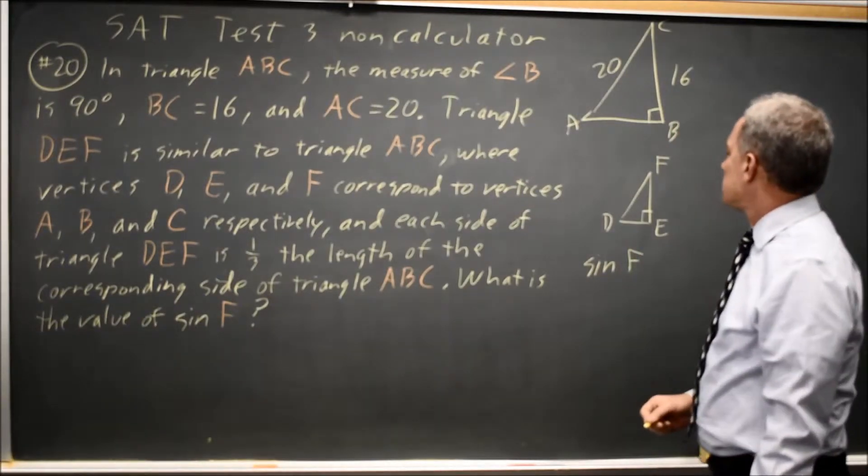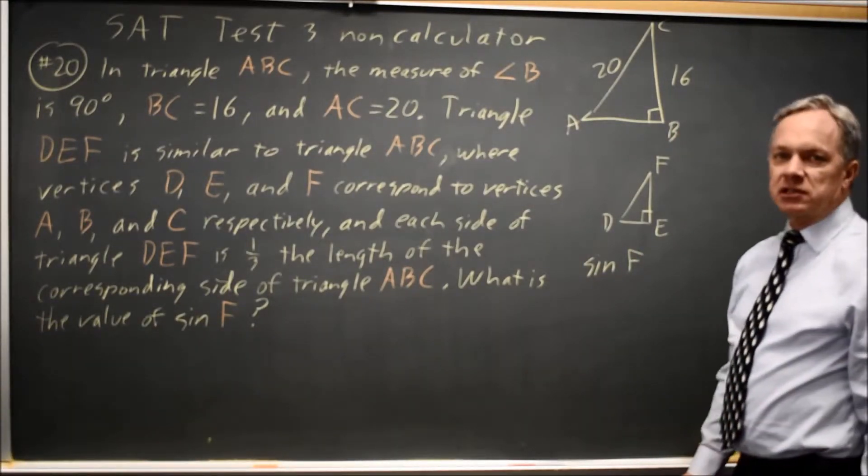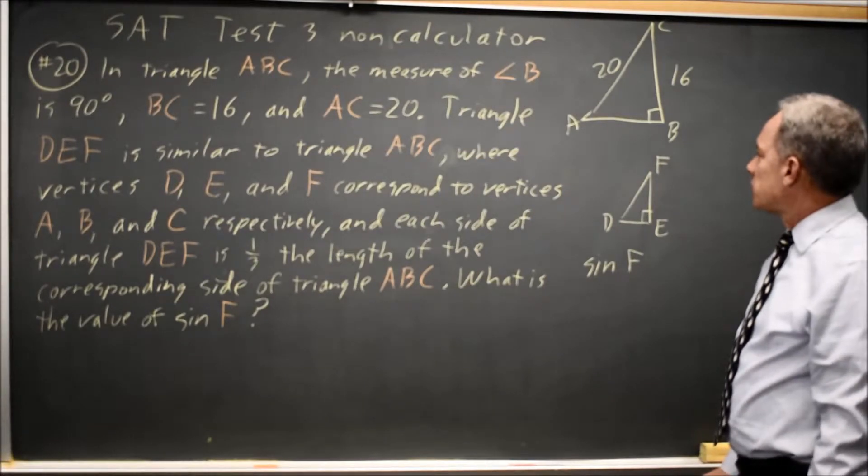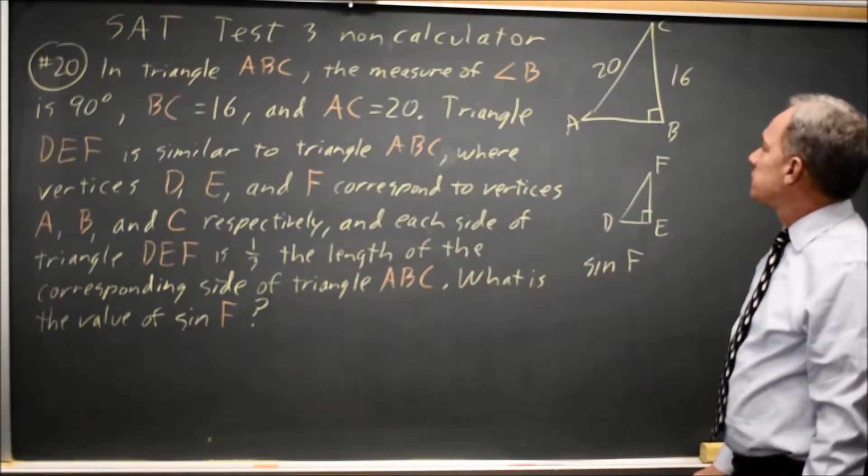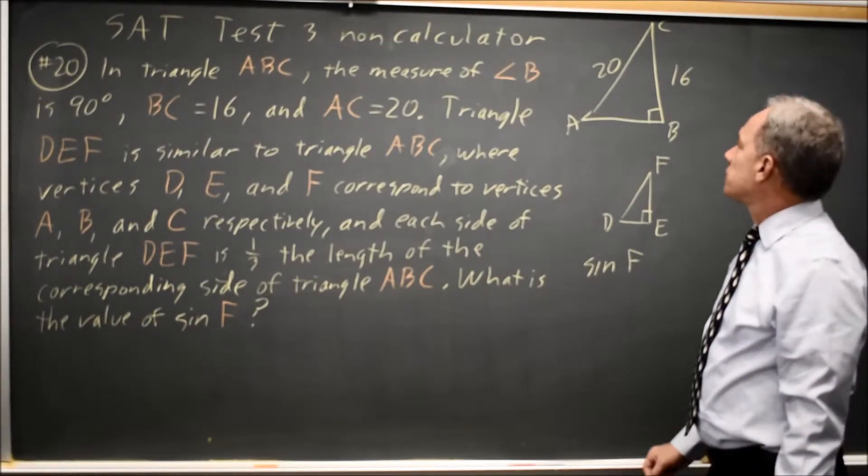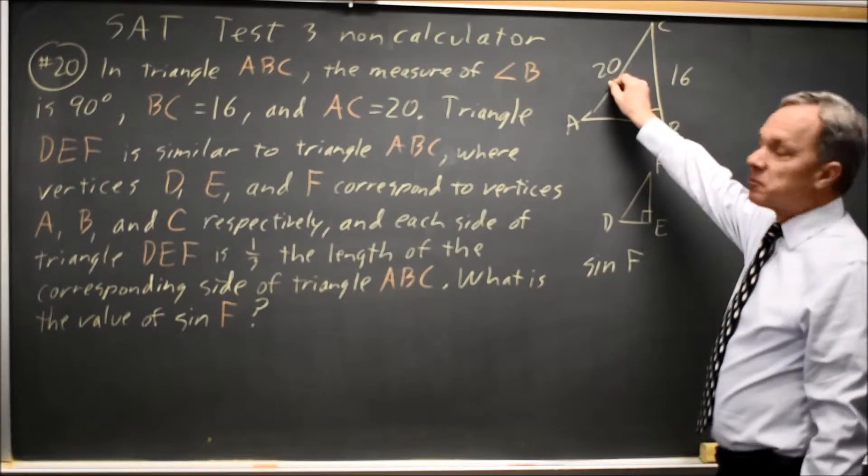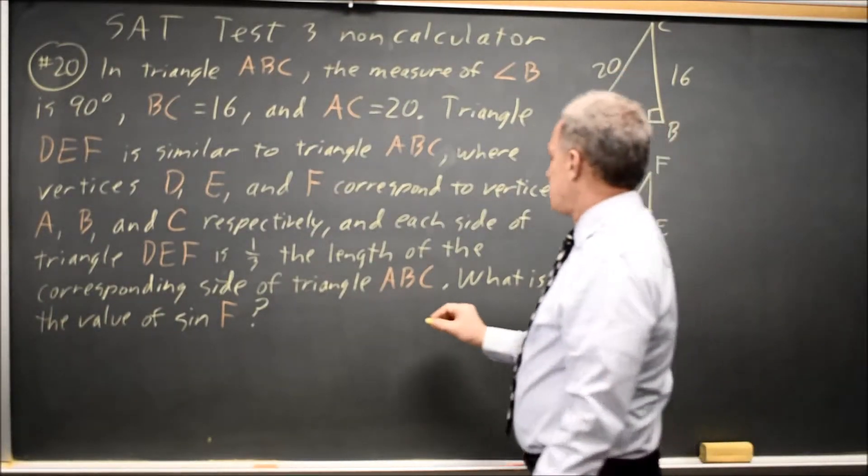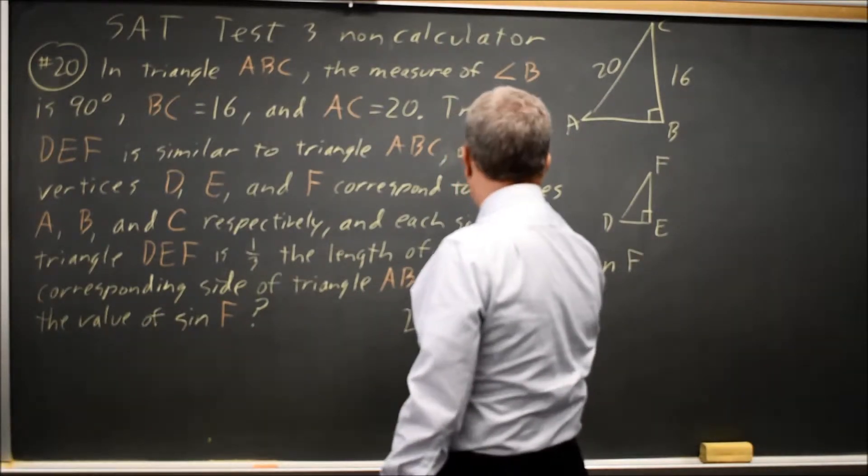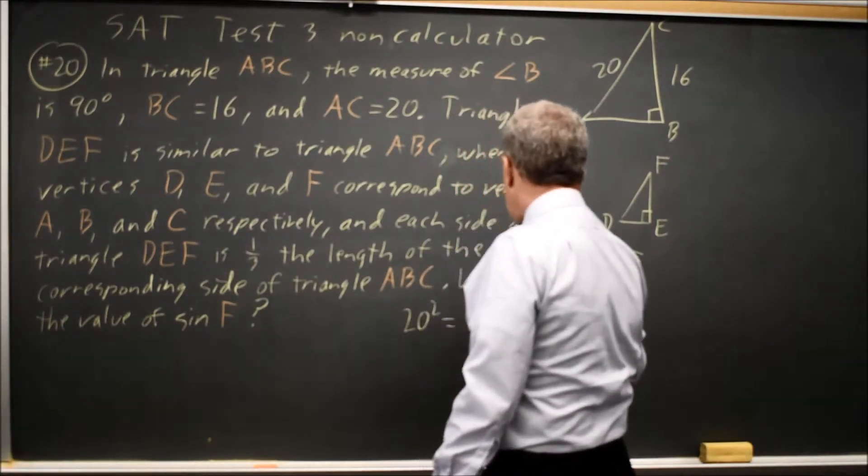I could find all three sides of the second triangle, but that may not be necessary. The first triangle, I can either use the Pythagorean Theorem, which is 20 squared equals 16 squared plus, let's call this third side, X squared.